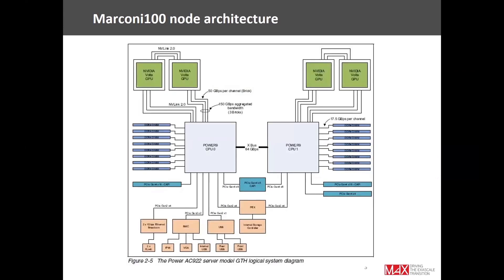Here is a schematic picture of how each node is composed. We have two Power9 CPUs and four NVIDIA Volta GPUs. This architecture is similar to another supercomputer in the world called Summit at Oak Ridge, the difference being that Summit has six GPUs per node. The architecture is otherwise very similar and the problems we face are quite similar as well.